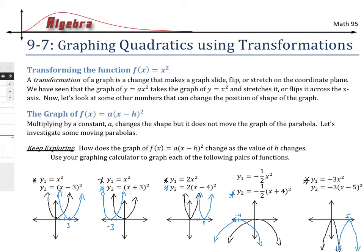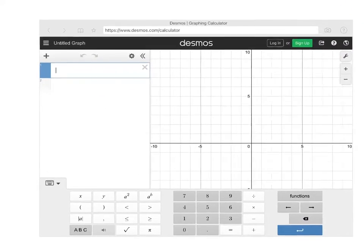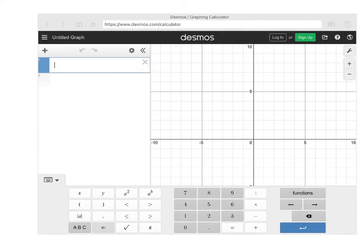In this section we're going to look at how we can transform the graph of y equals x squared and make it look like another parabola, getting a form called vertex form that's very useful. Let's check this out by going to Desmos and starting with graphing y equals x squared.